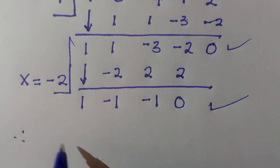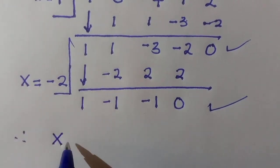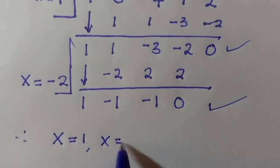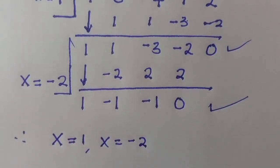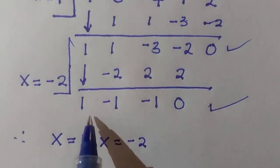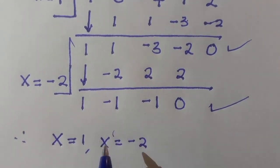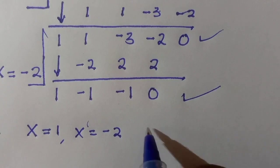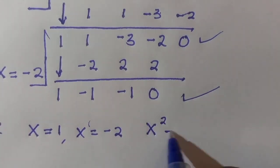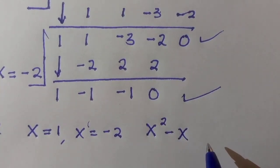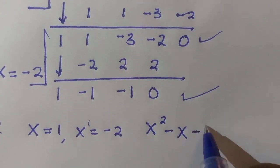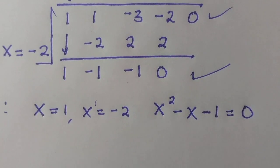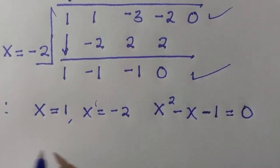We can now conclude that x equals 1 is one solution and x equals minus 2 is another, from the synthetic division steps above. We can now extract the remaining quadratic: x squared minus x minus 1 equals 0, since the remaining non-zero terms number 3, confirming it is a quadratic.